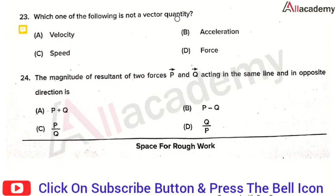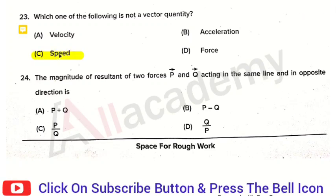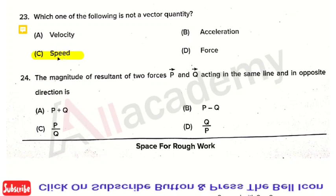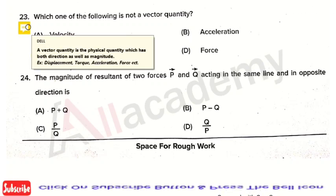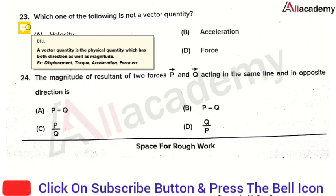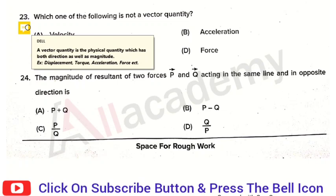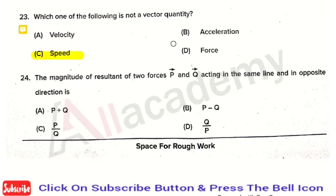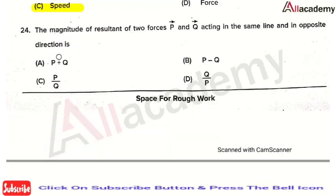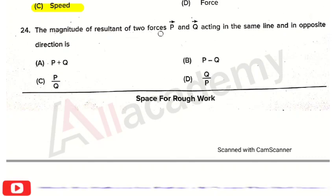The next question is: which one of the following is not a vector quantity? The right answer is option 3, that is speed — speed is not a vector quantity. A vector quantity is a physical quantity which has both direction as well as magnitude. For example, displacement, torque, acceleration, and force all have both direction and magnitude. Speed is the correct answer.